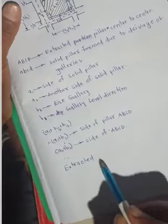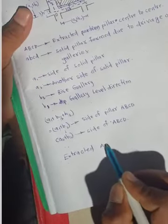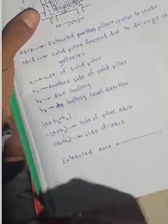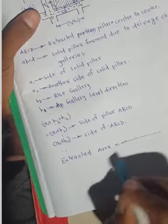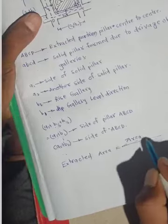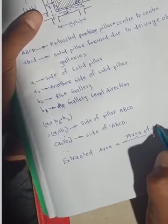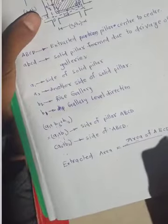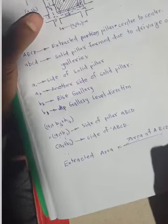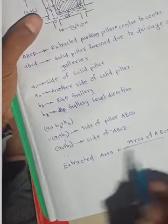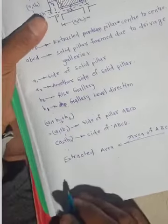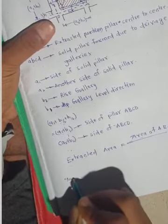The extracted area equals the area of capital ABCD minus the area of small ABCD, which gives the extracted area. Then we derive the percentage of extraction.